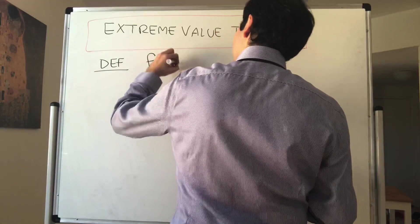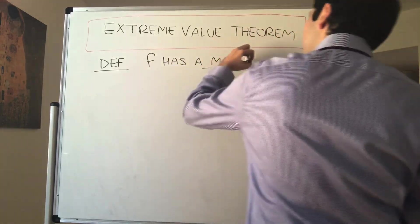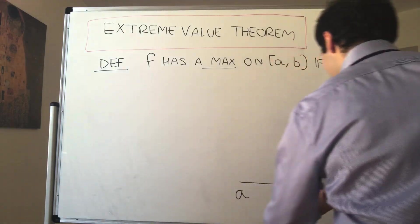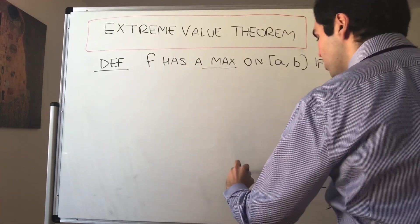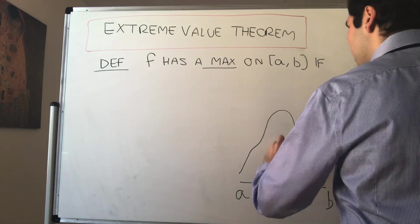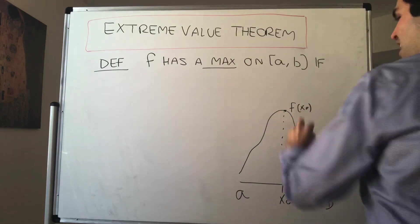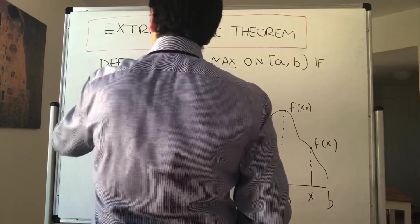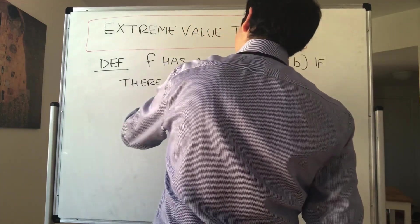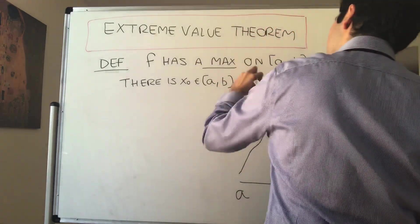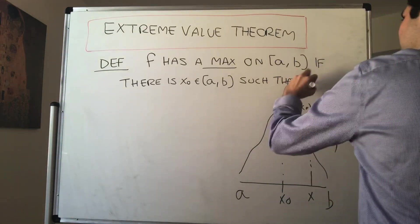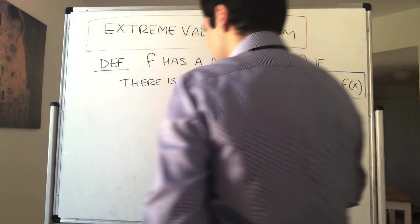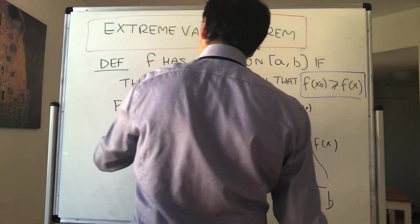Definition: f has a maximum on the interval [a, b] — let me illustrate this with a picture first. If you can find some x₀ in your interval such that f(x₀) is bigger than any other f(x), such that f(x₀) is really the maximum — it's bigger than any other f(x) in your interval. So if there exists x₀ in [a, b] such that f(x₀) ≥ f(x) for all x in [a, b].